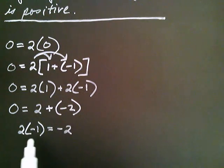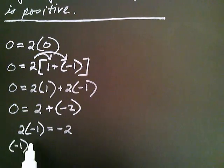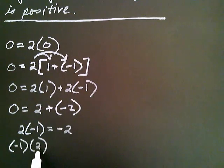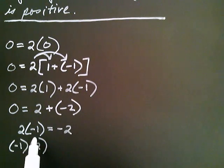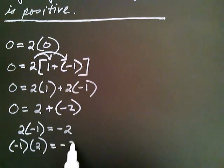Two times negative one is the same as negative one times two. So negative one times two must be equal to negative two.